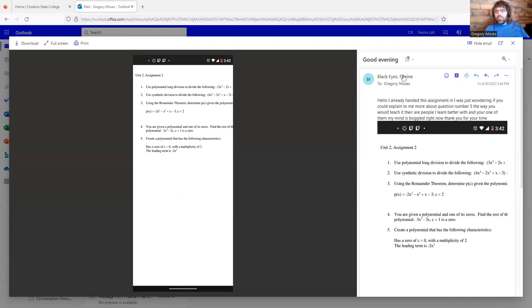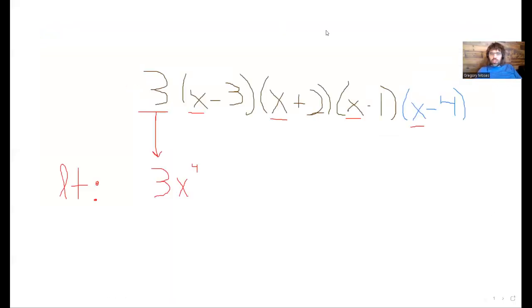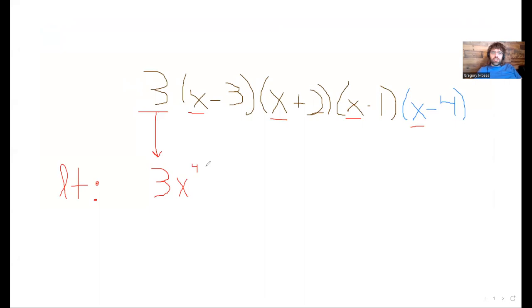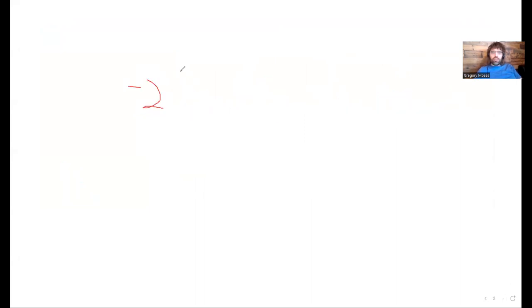We'll need a negative 2 to get this negative 2x cubed. And then if we want an x cubed, we're going to need 3x terms. This x to the fourth came from having 4x terms. So if we want an x cubed, we're going to need 3x terms.